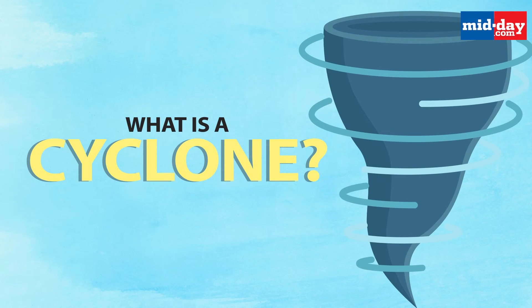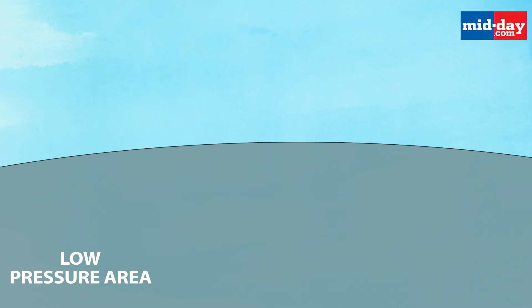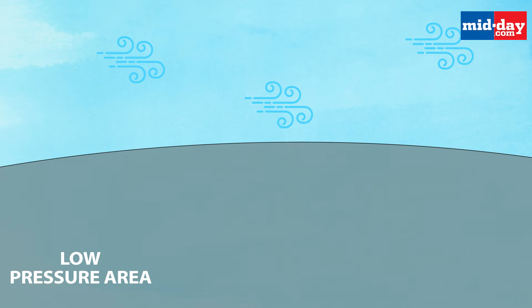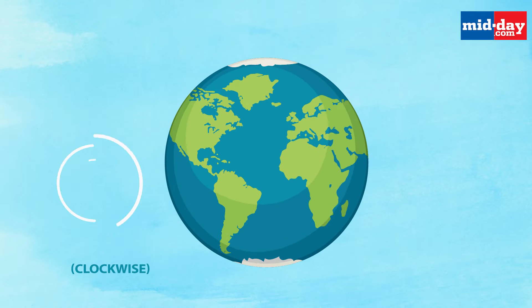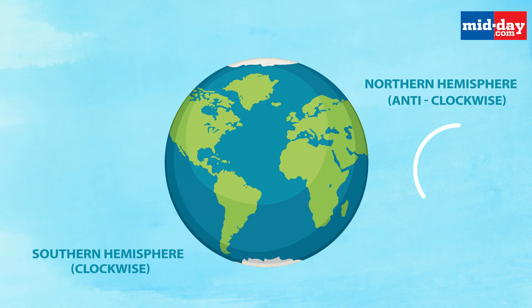What is a cyclone? In meteorology, a cyclone refers to any low-pressure area with winds spiralling inwards. Cyclones rotate clockwise in the southern hemisphere and anti-clockwise in the northern hemisphere.